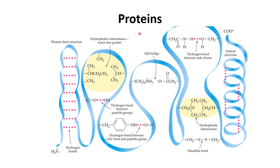Proteins are also solid at STP because of the complex structure of proteins. There are many types of interactions: hydrogen bonding between peptide groups, hydrogen bonding between side chains, and hydrogen bonding in the coil form. Due to the presence of many types of interactions between protein molecules, proteins are also solid at STP.